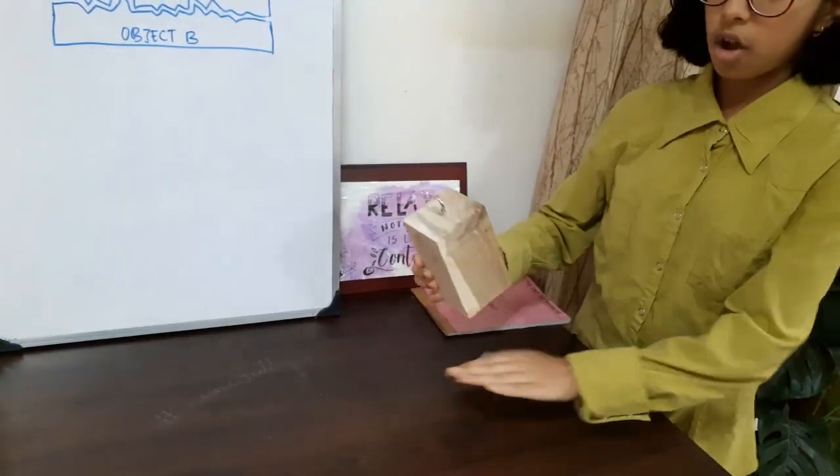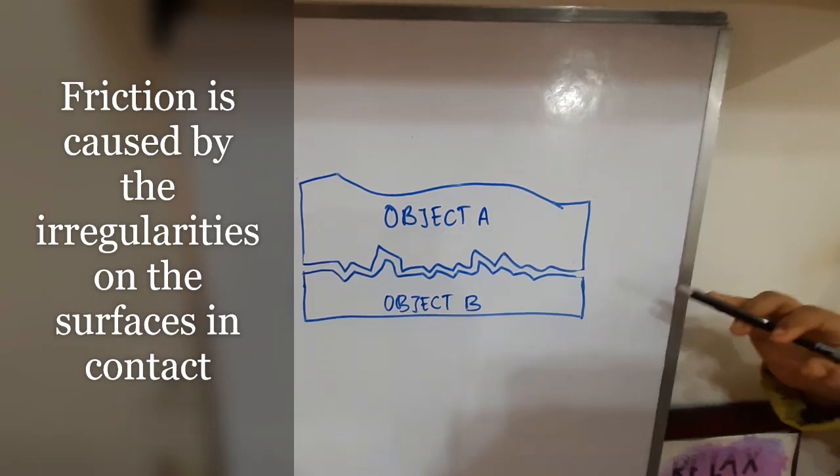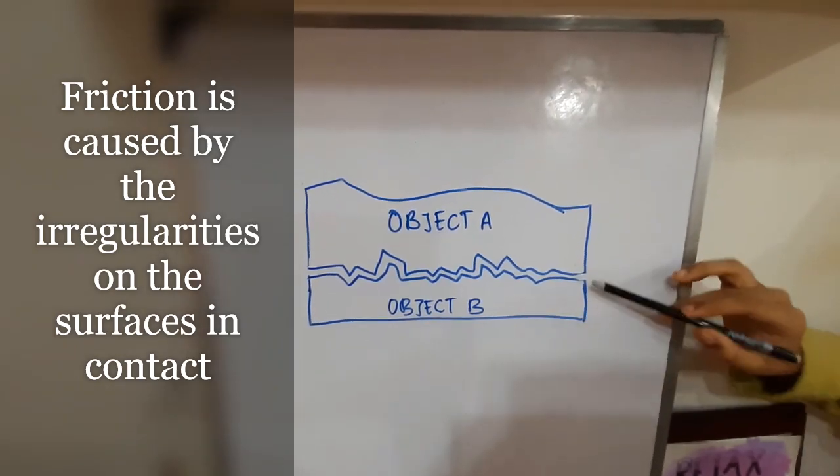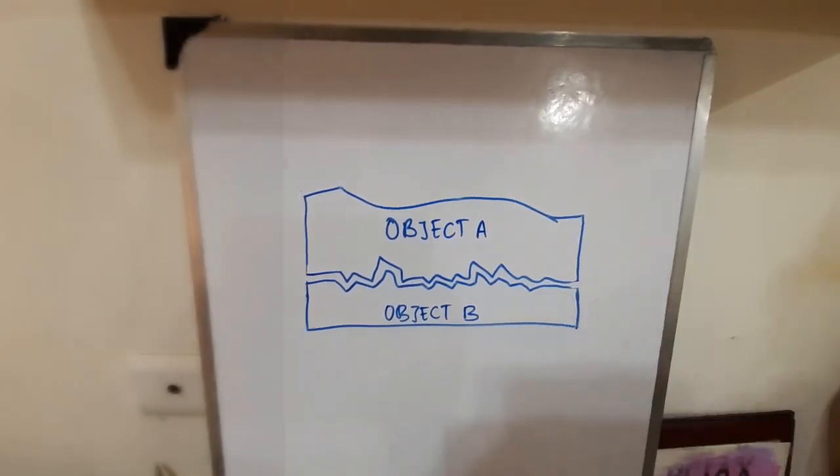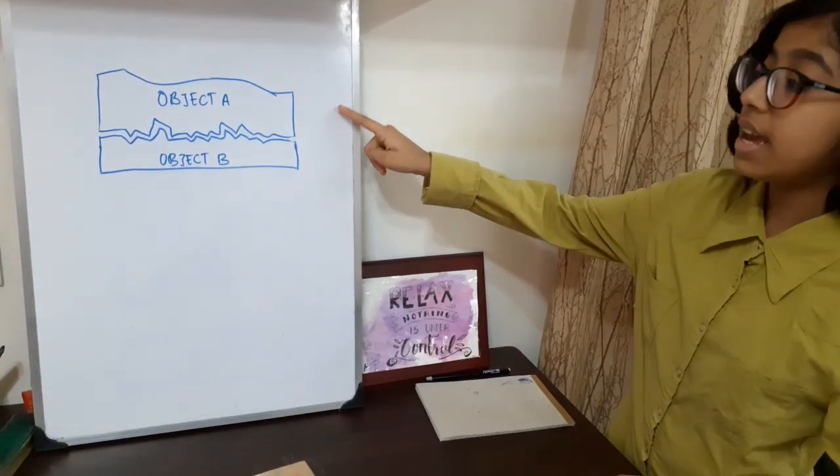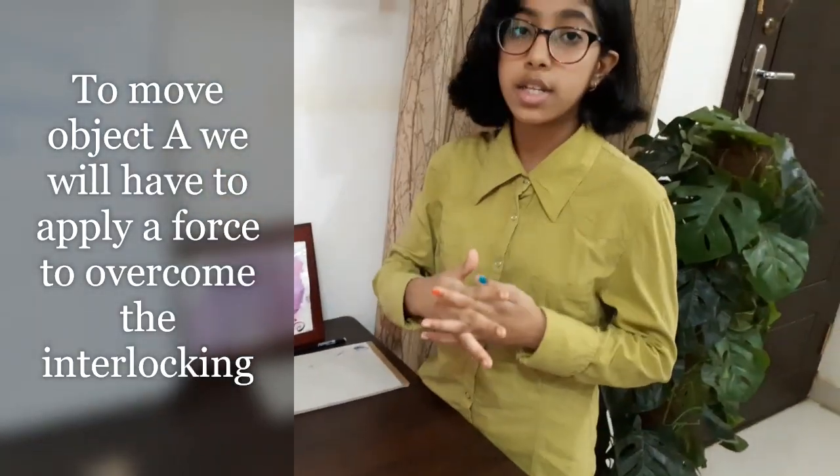the surface of the block and the table surface are in contact. Take a look at this diagram. You can see that friction is caused by the irregularities between the two surfaces in contact. When object A is resting on object B, these irregularities lock into each other.